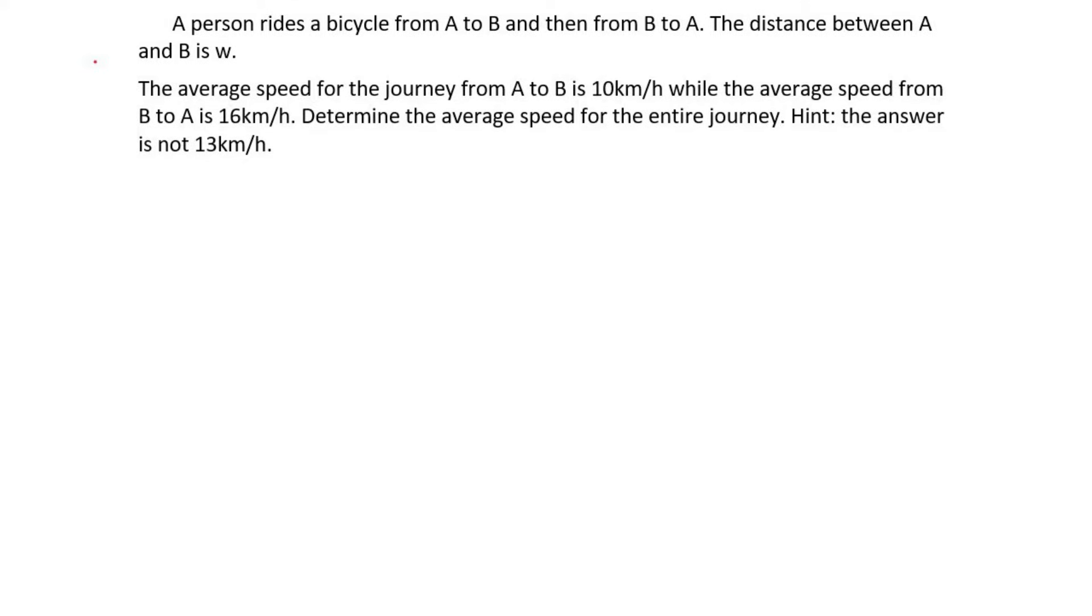We've got a person who's going to ride a bicycle from A to B, and then they're going to come back. On the way from A to B, they tell us that the average speed is 10 kilometers per hour. And then on the way back, they cycle at 16 kilometers per hour. Then it says find the average for the entire journey.